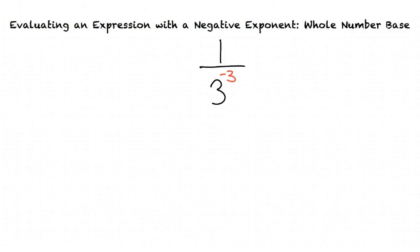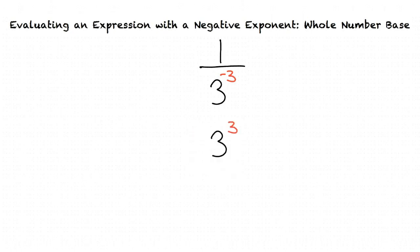From what we learned, the first step is to move both the base and exponent to the numerator in order to make the exponent positive. This results in 3 to the third. From there, we follow the rules of exponents and raise 3 to the third power in order to simplify our expression. This results in our final answer of 27.